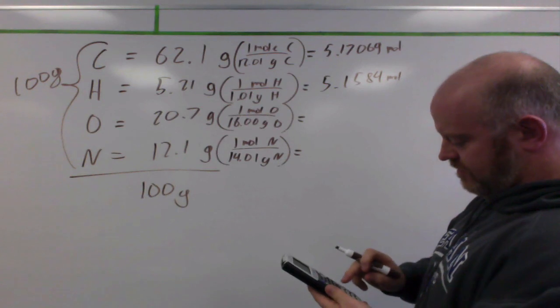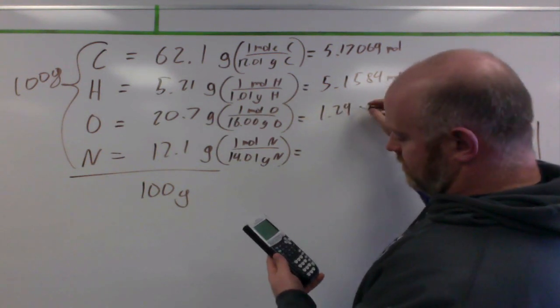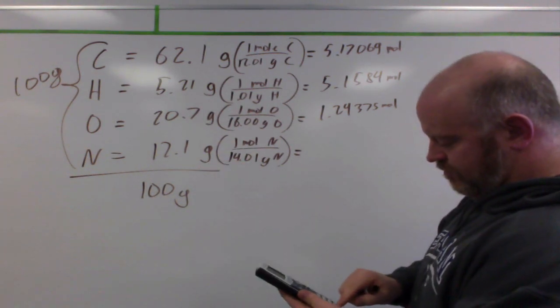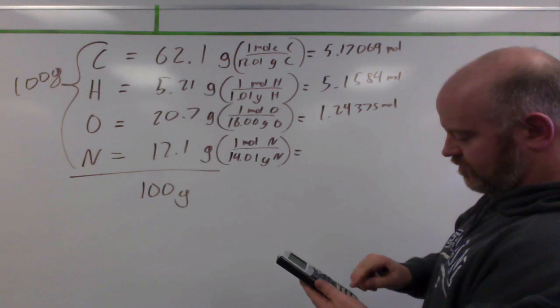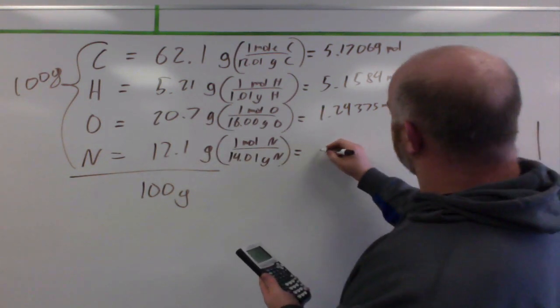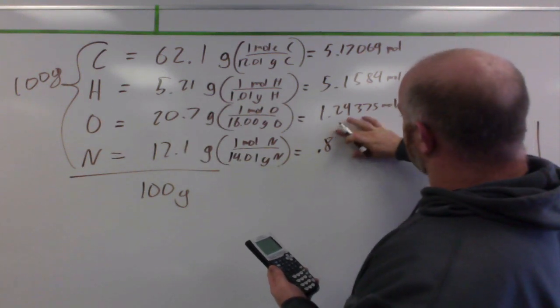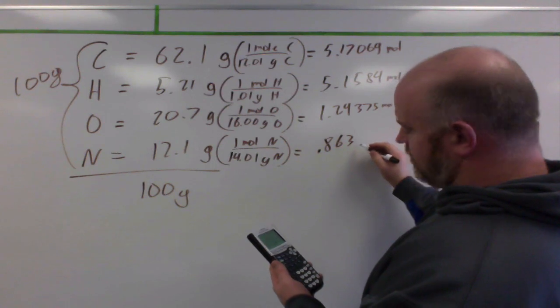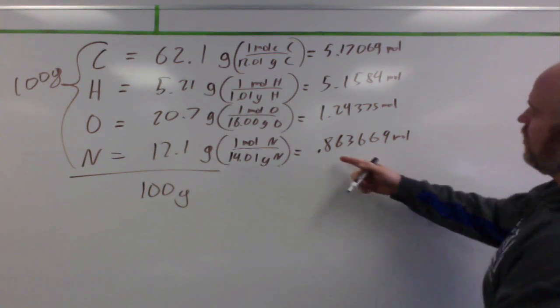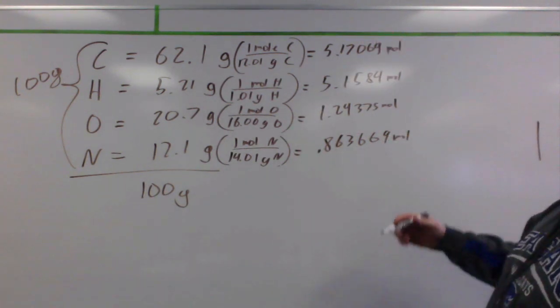20.7 divided by the 16.00, I get 1.29375 moles. And finally, our 12.1 divided by 14.01, and we get 0.863669 moles. And again, I'm randomly running these out way past the number of significant figures we need to make this process work. Now, I have my mole ratio. So I have this many moles for that many moles for that many moles for that many moles.